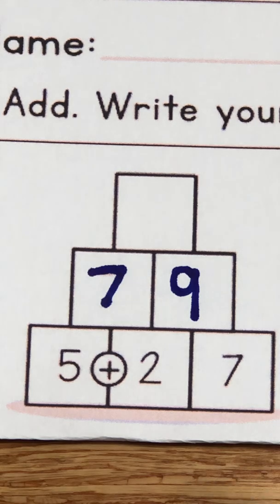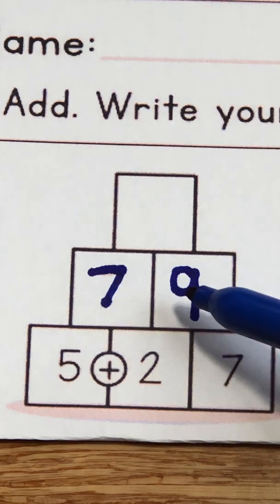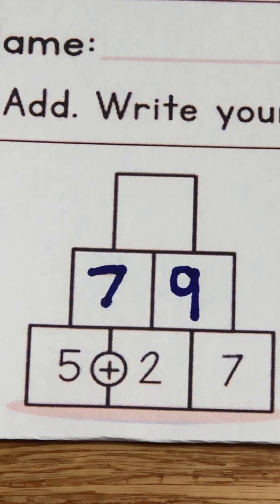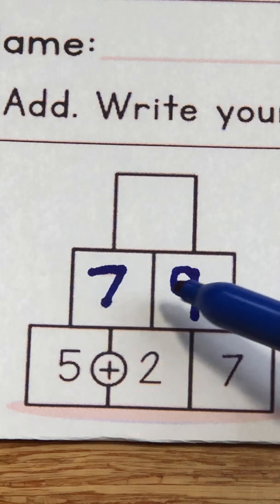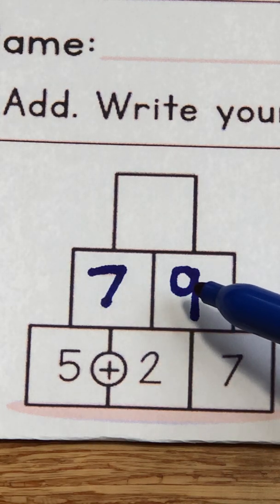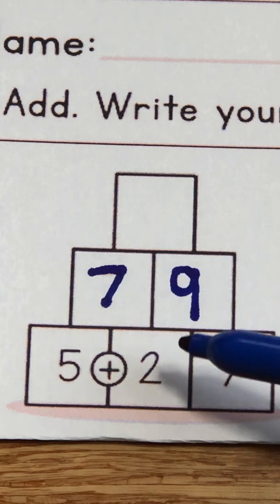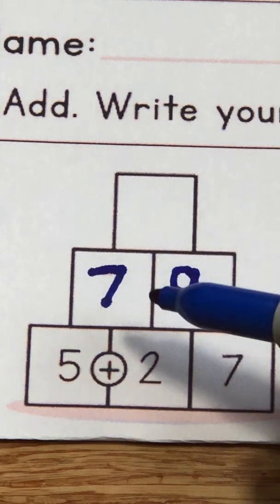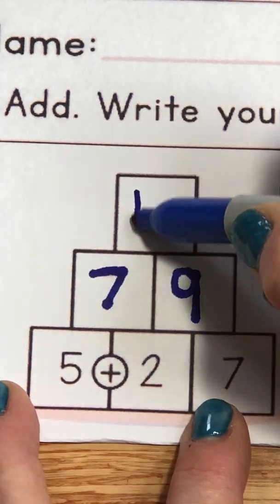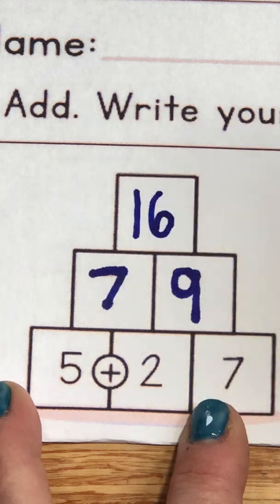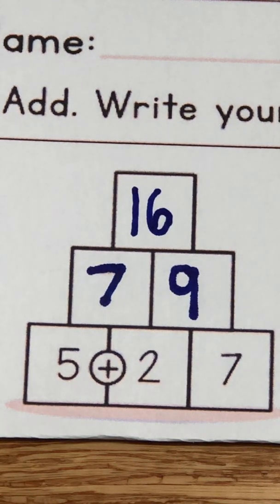Now look at this. I need to take my seven and add it to the nine. Let's take one away from the seven and give it to the nine to make that a ten and a six. And you will find out that seven plus nine equals, that's right, 16.